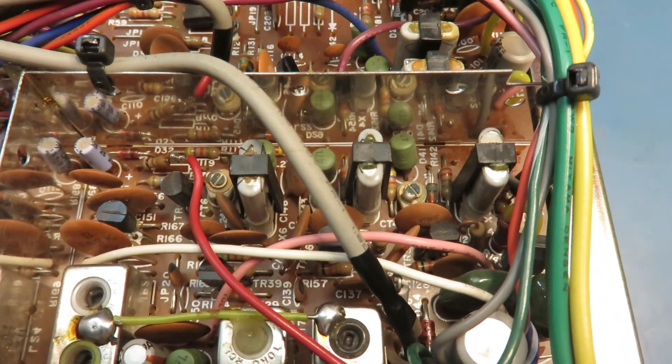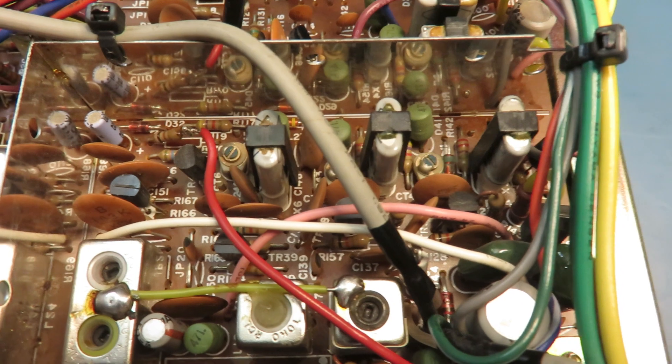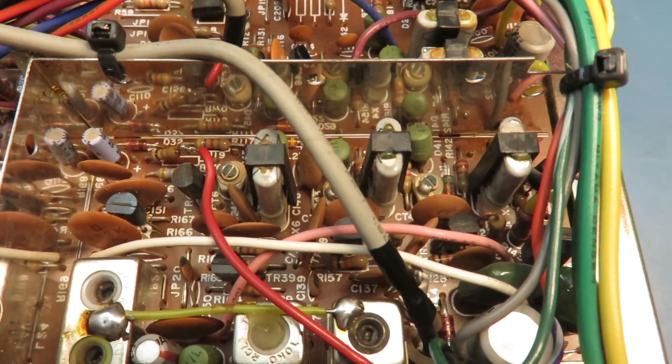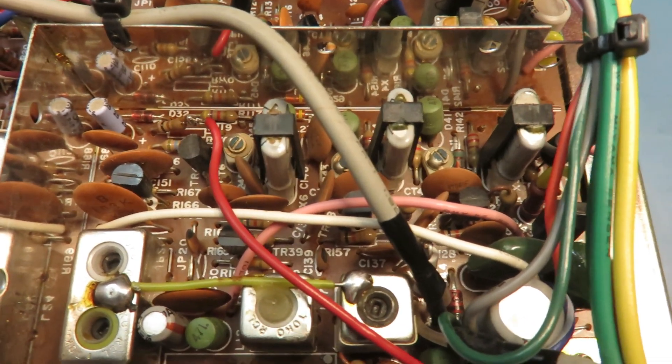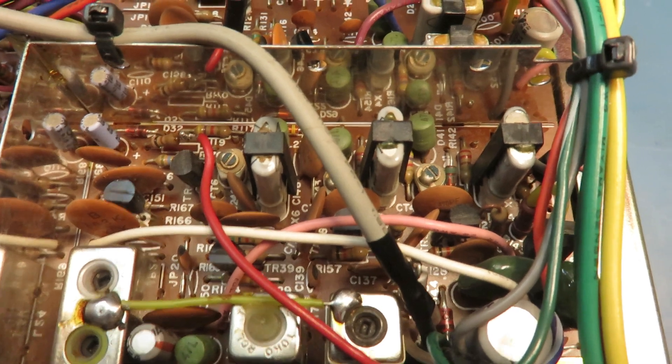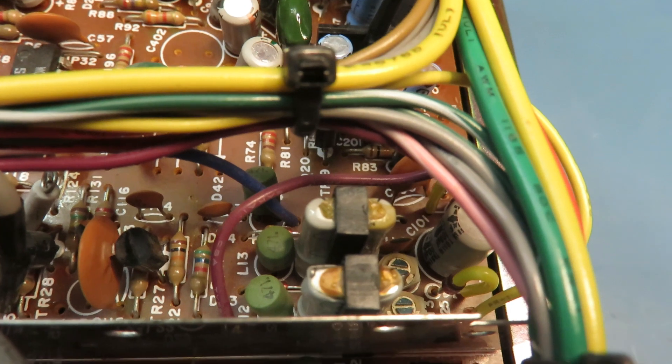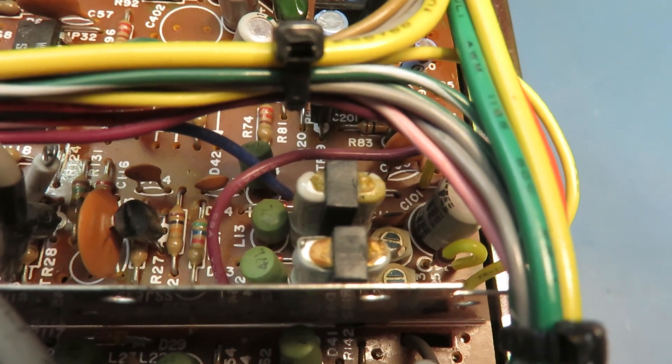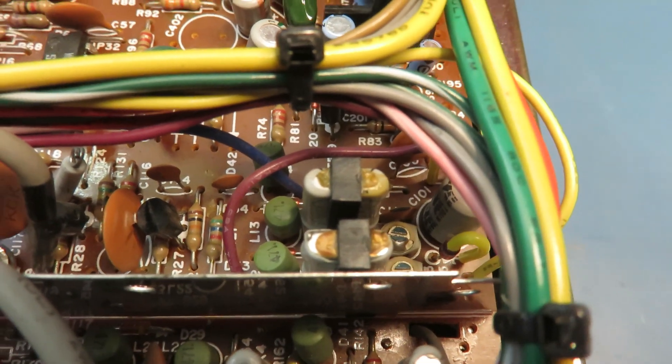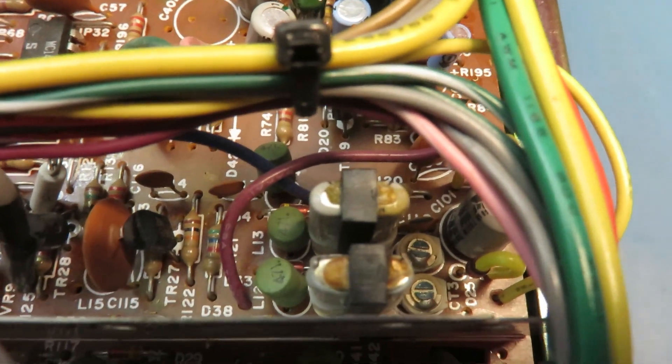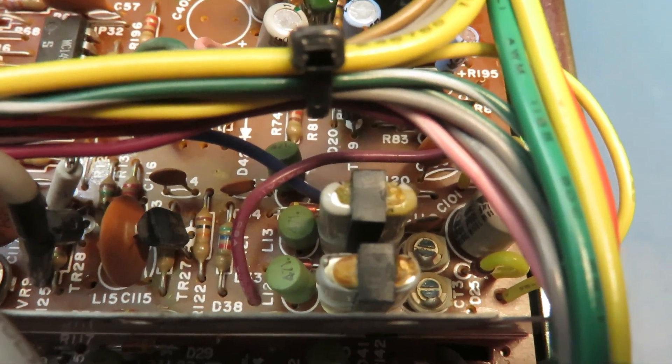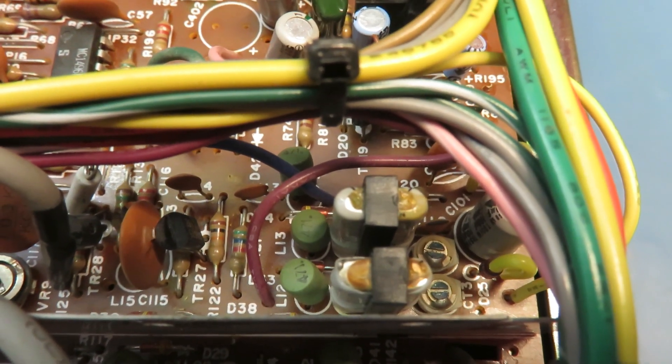You don't really have to mess with them too much, they're probably pretty close to where you're at. But you see back here there's two more crystals - these are your eight megahertz offset crystals. The top one's for lower sideband and the bottom one is for upper and AM.